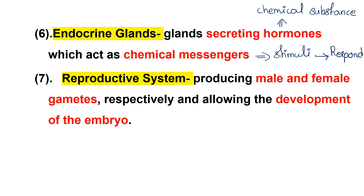This is a chemical message carried by hormones. The reproductive system produces a new generation of offspring. It involves the male and female, with the fusion of two cells formed from two individuals of the same species, resulting in an embryo.